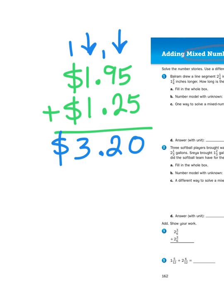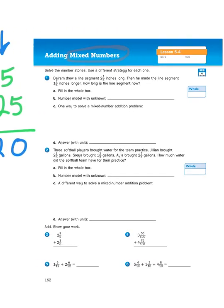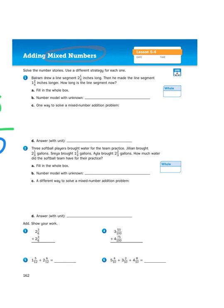So, I look at the two amounts I need to add. I organize them vertically. I start from right to left, adding the fractional parts first, and then the whole number parts, and then I've got my answer. So, that's what I'm going to do in this story problem. It says, solve the number stories, use a different strategy for each one. Balram drew a line segment 2 1/4 inches long. Then he made the line segment 1 2/4 inches longer. How long is the line segment now?